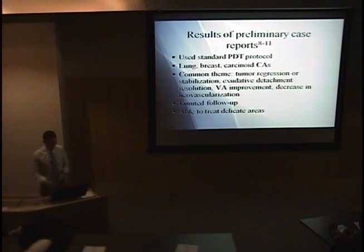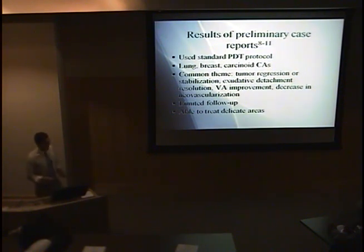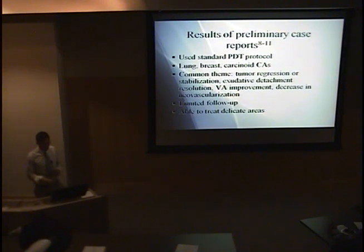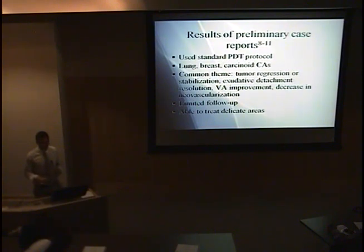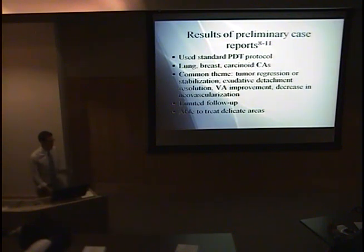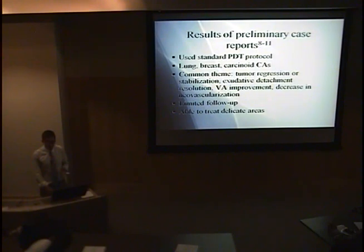There have actually only been four cases in the literature described so far for choroidal metastasis treated with PDT — one lung, two breast, and one carcinoid metastatic to the choroid. There was a very consistent theme across all four studies showing tumor regression or stabilization, resolution of serous or exudative detachments, improvement in vision, and a very dramatic decrease in neovascularization. One of the biggest limitations is follow-up: since median survival is so low, it's very hard to study in patients with this advanced disease who may not be around long enough to see what happens to these lesions.